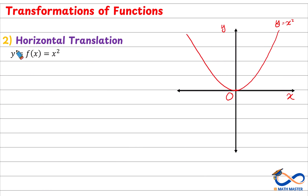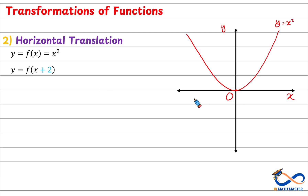Now we will move on to horizontal translation. Here we have the basic graph x squared again, before any horizontal translation. Horizontal translation happens when we add or subtract numbers inside the bracket with x, not outside as we did before. Here, we added 2 to x, so the movement will be across the x-axis. Since we added 2, it will be a translation of 2 units to the left — not to the right as we might think.